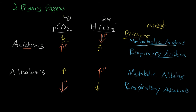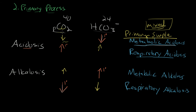In determining your primary process, I'm implying you probably have one single underlying process going on. It's possible you could be having a mixed picture with multiple things going on, which gets a little more complicated. So if the pattern you're seeing doesn't follow this exact picture, you have a sense that maybe you have a mixed process going on. But for the most part, you can look at your CO2, your bicarbonate, and your pH and at a glance figure out what your primary process is.